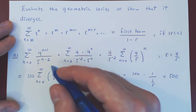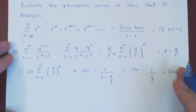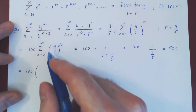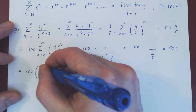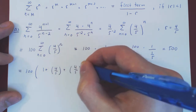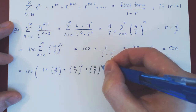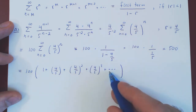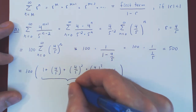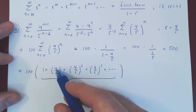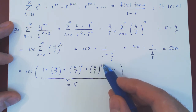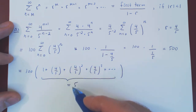If you want a more intuitive feeling for the series, you can expand the first few terms. You have 100 times: 4 over 5 to the 0 (that's 1), plus 4 over 5 to the 1, plus 4 over 5 squared, plus 4 over 5 cubed, and so forth. If you keep adding consecutive powers of 4 over 5 forever, this infinite sum equals 5, and multiplied by 100 gives 500.